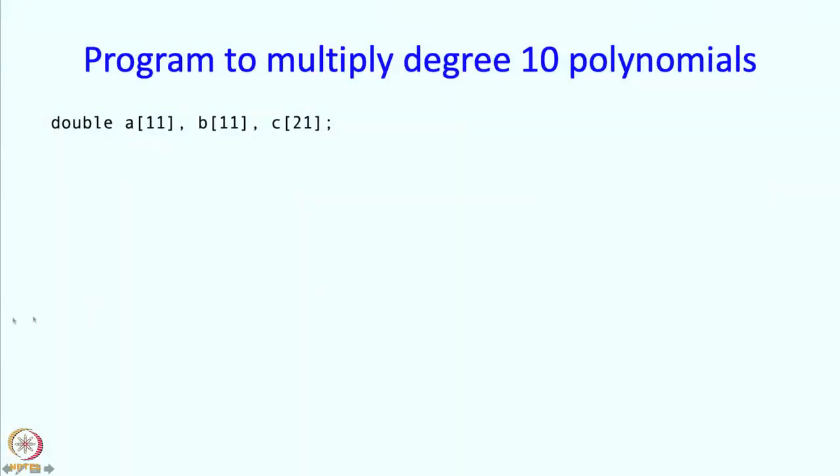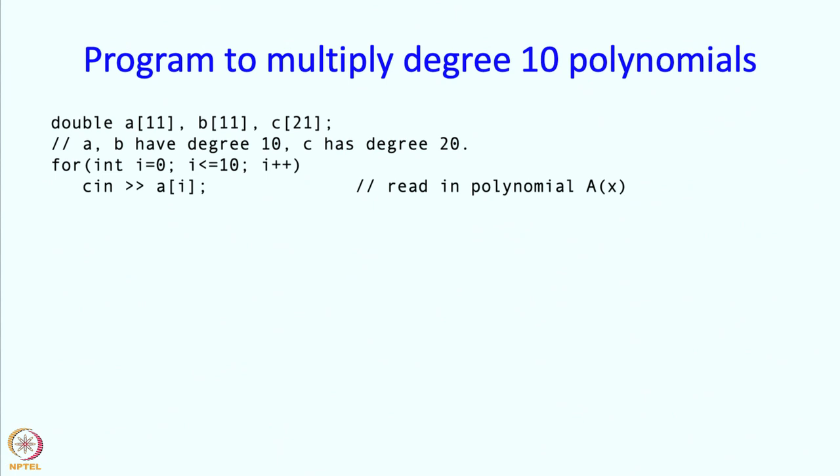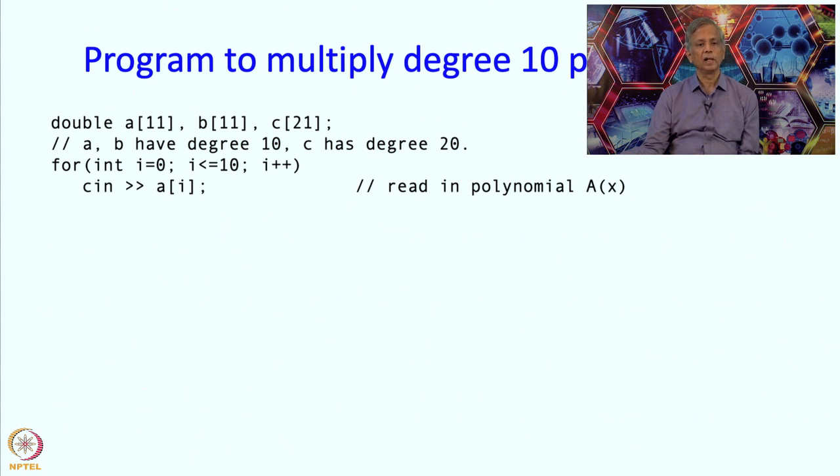So let us say for simplicity we have two polynomials both of degree 10 and we want to multiply those. So clearly A will have 11 coefficients, so we will reserve an array with 11 elements for it, an array of 11 elements for B and C will have 21 coefficients, so we will use an array of 21 elements for C. So let us see how do we read them, reading is straightforward. We are going to read A first starting with A0 going all the way till A10. So when I say read in the polynomial A of x, well the polynomial is determined by the coefficients. So I really mean reading the coefficients. And of course you know by now that reading in the coefficients is done simply using a for loop.